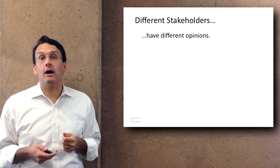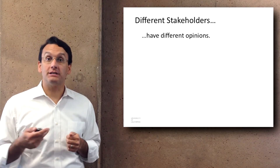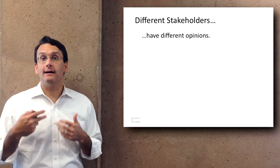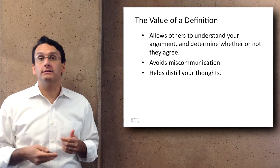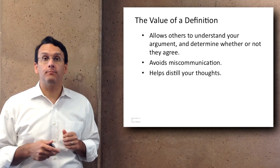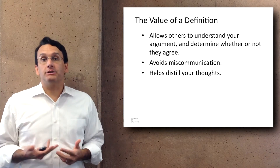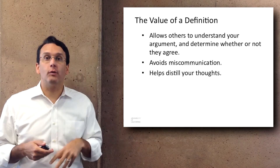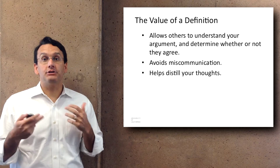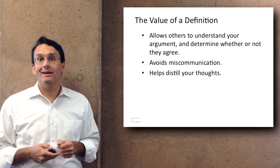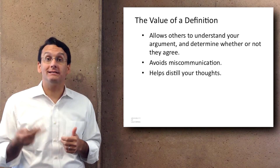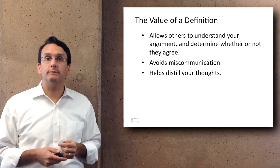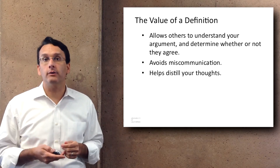Ultimately, like so many other topics, there are different stakeholders, and each has a different opinion about how to think about the world. This goes back to taxonomies — the ways people organize the issues in their world. There's a lot of value in the definition of terms: defining a term in a specific way allows others to understand your argument and determine whether or not they agree, helps avoid miscommunication, and helps to distill a person's thoughts rather than using a term glibly without knowing quite what it means.